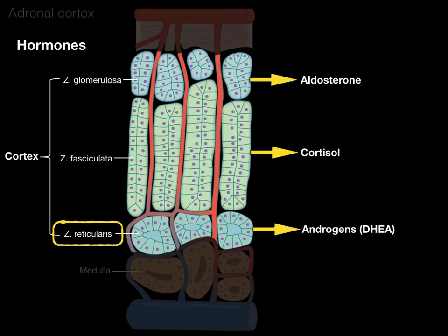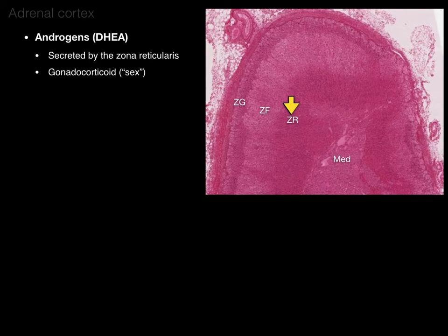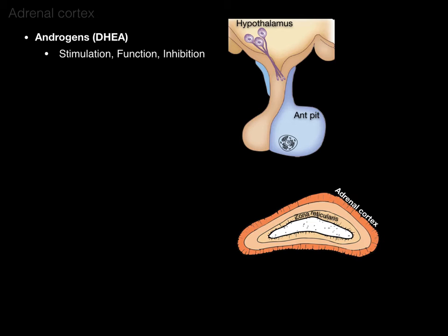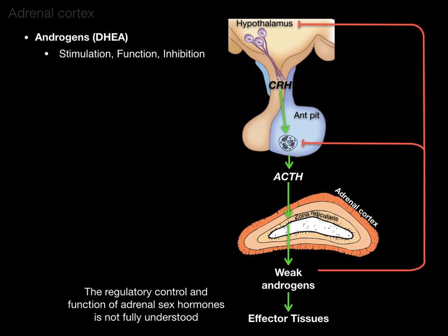Now let's briefly cover the zona reticularis. Androgens are secreted by the zona reticularis — these are gonadotropic hormones targeting the primary sex organs, the testes and ovaries. They are also steroid hormones. The stimulation pathway is the same: the hypothalamus secretes CRH, telling the anterior pituitary to secrete ACTH, which targets the zona reticularis to produce weak androgens. They have a negative feedback loop to the anterior pituitary and hypothalamus. The regulatory control and function of adrenal sex hormones is not yet fully understood.